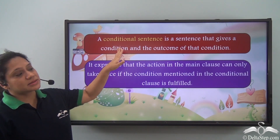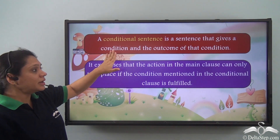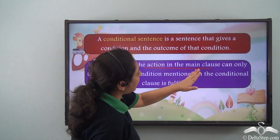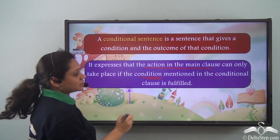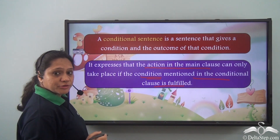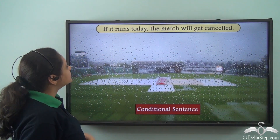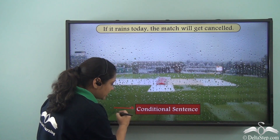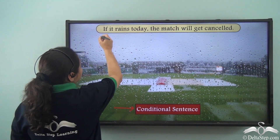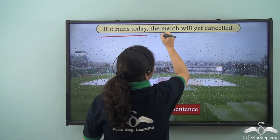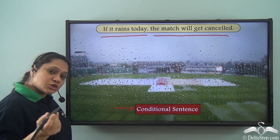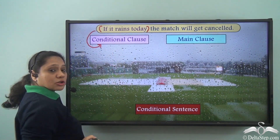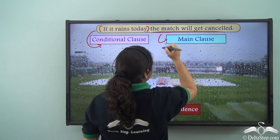A conditional sentence gives a condition and the outcome of that condition. It expresses that the action in the main clause can only take place if the condition in the conditional clause is fulfilled. For example: 'If it rains today, the match will get cancelled.' Here, 'if it rains today' is the conditional clause and 'the match will get cancelled' is the result or main clause.